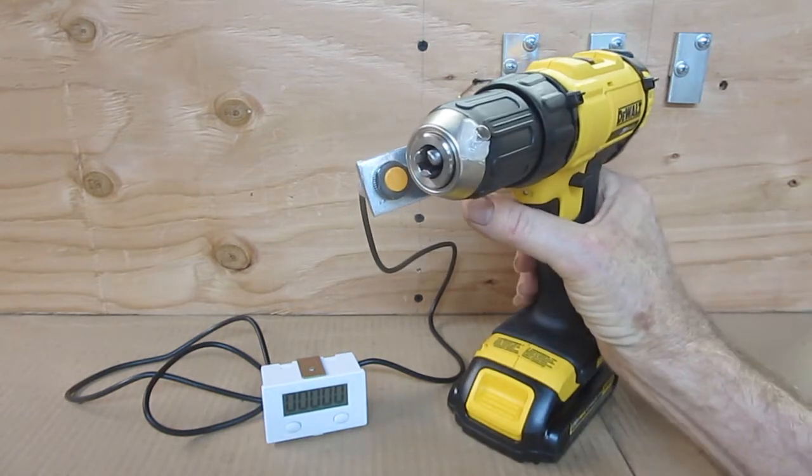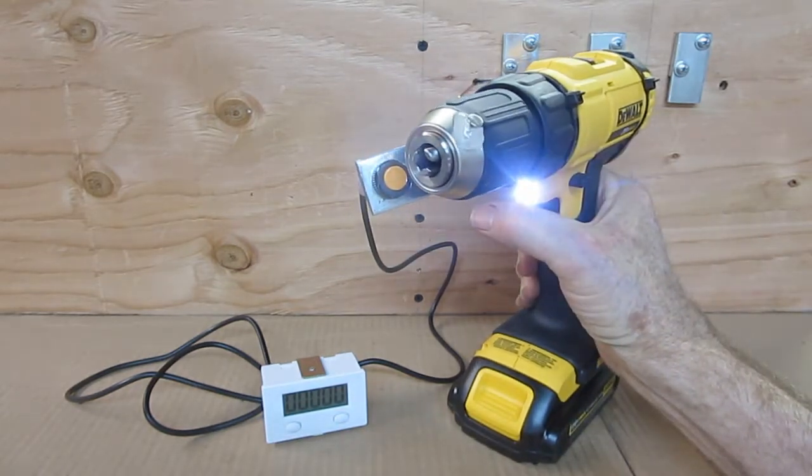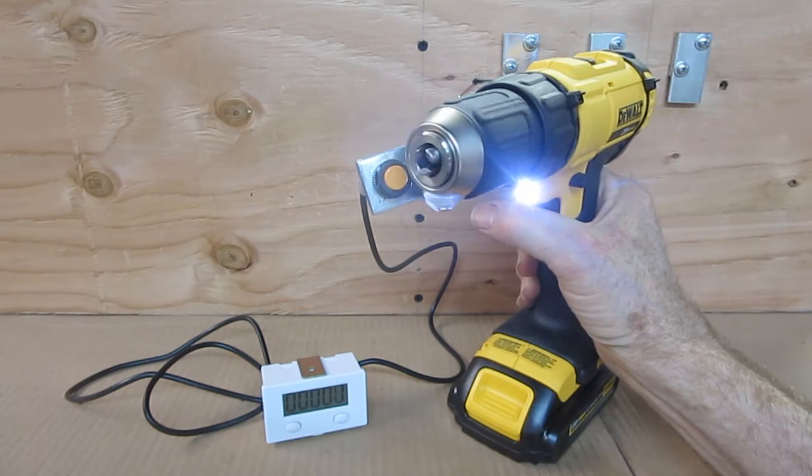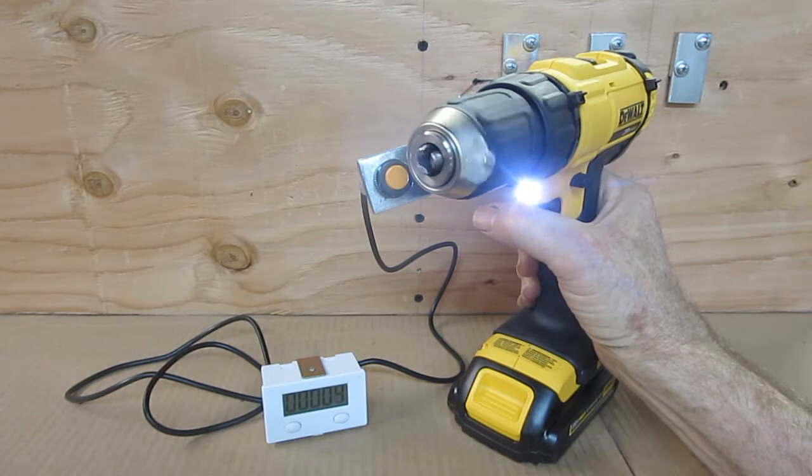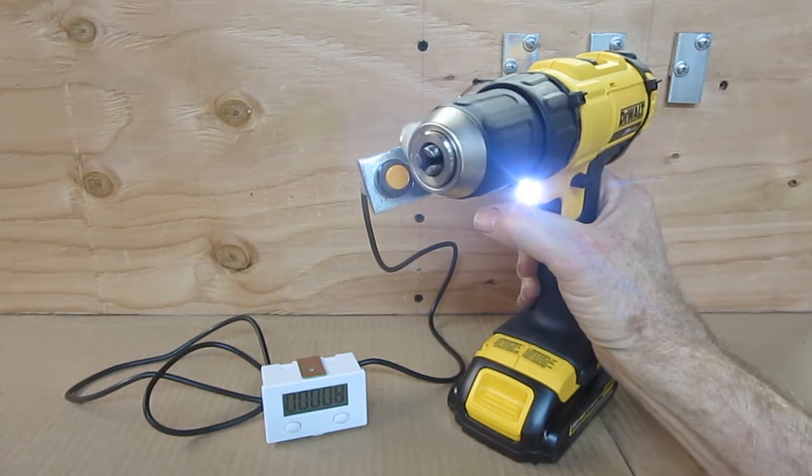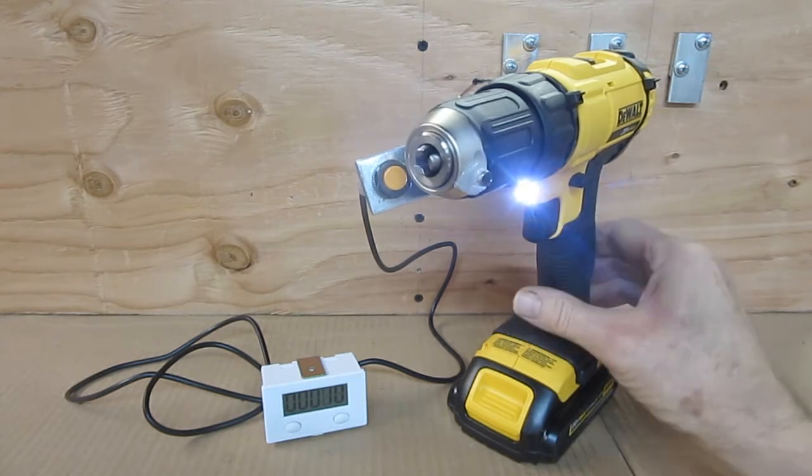I'll press the trigger to demonstrate. So here it goes, and every time it passes there it increments the counter by one. So that means every time it makes one revolution or one turn it counts it.